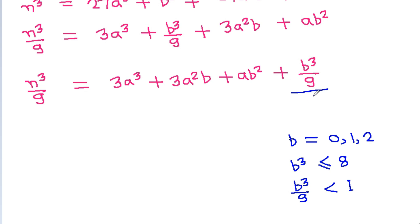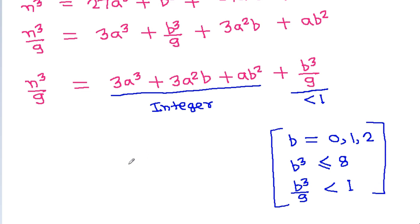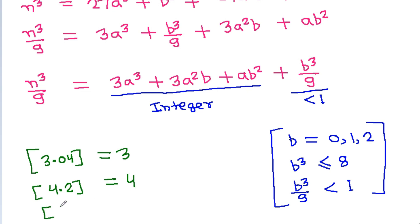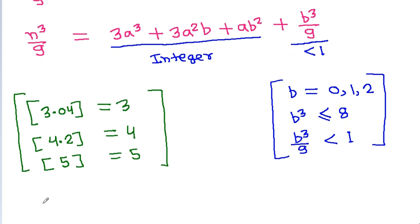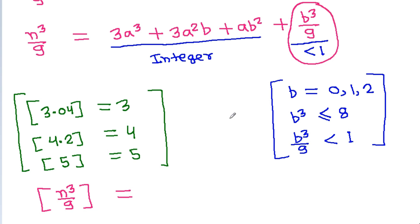Since b³ divided by 9 is less than 1, and the greatest integer function of a number — for example, floor(3.04) equals 3, floor(4.2) equals 4, floor(5) equals 5 — the greatest integer of n cubed by 9 will therefore equal 3a³ plus 3a²b plus ab².